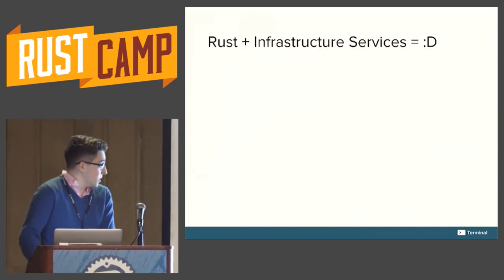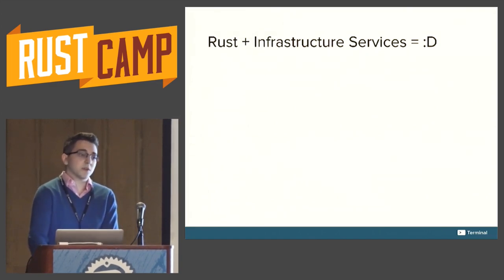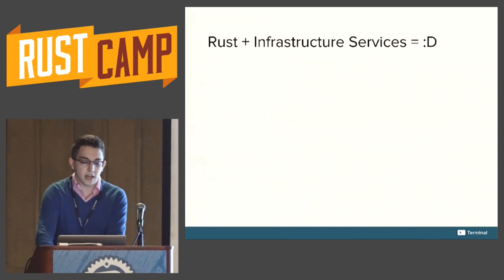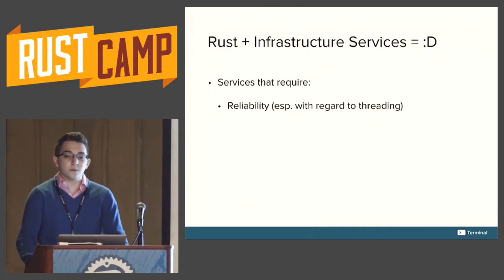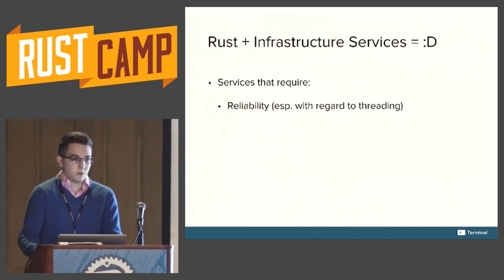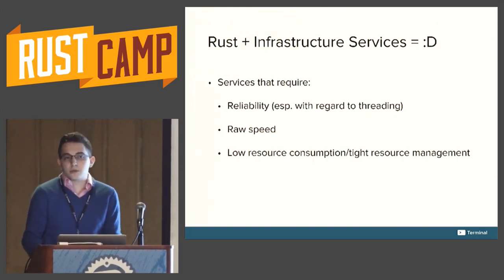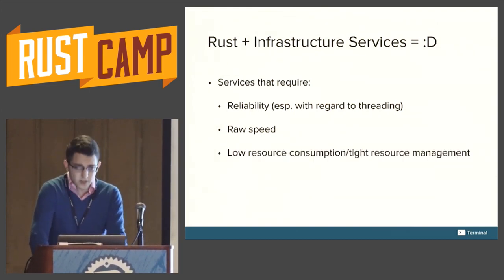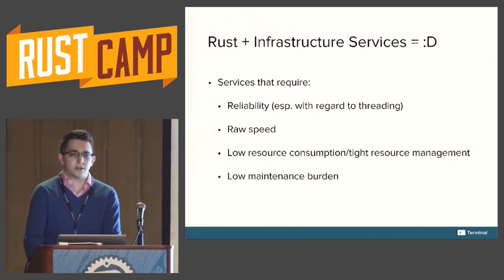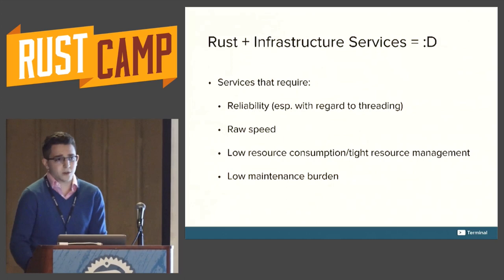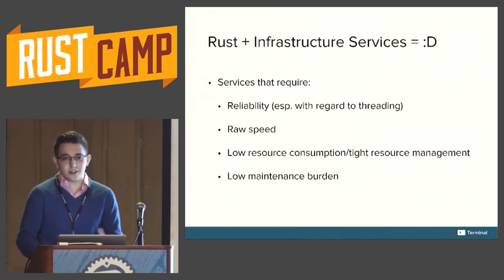A lot of the success we've seen using Rust in production has been for basically thin infrastructure services — things that need to be reliable, especially with regards to threading. Rust has a really nice concurrency model that lets you do ambitious things without being afraid you're screwing up. Things that need to be really fast, have very low resource requirements, or need to tightly manage the resources they use. And things where you want a low maintenance burden — you write the service, it's correct, it's well tested, and you can move on to other projects.